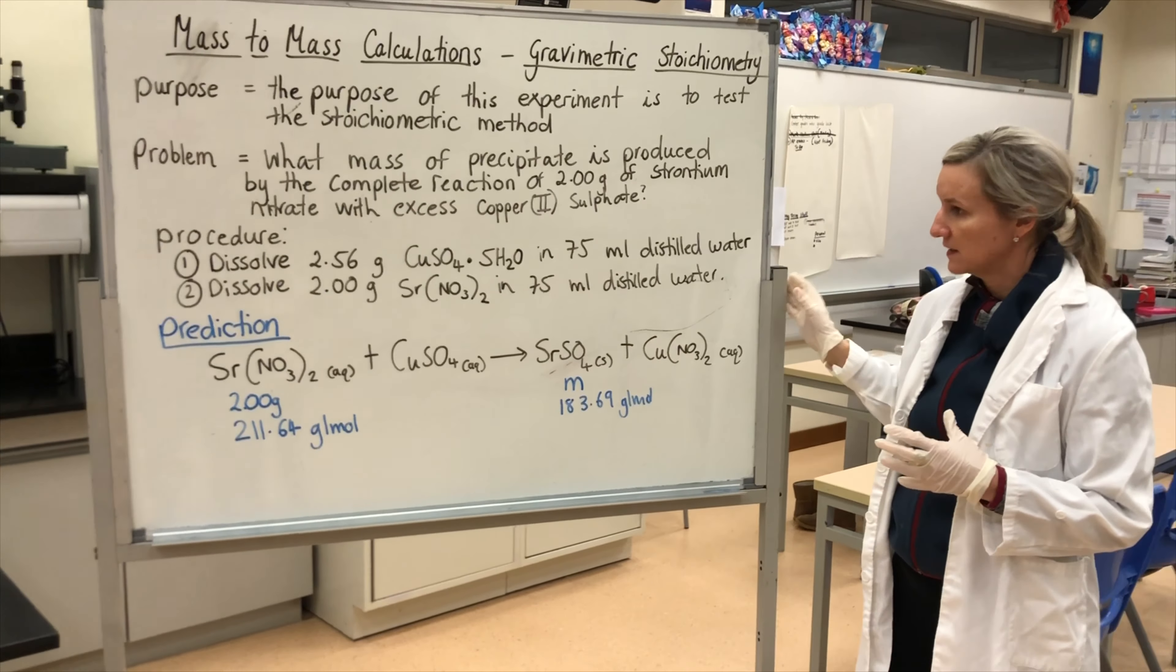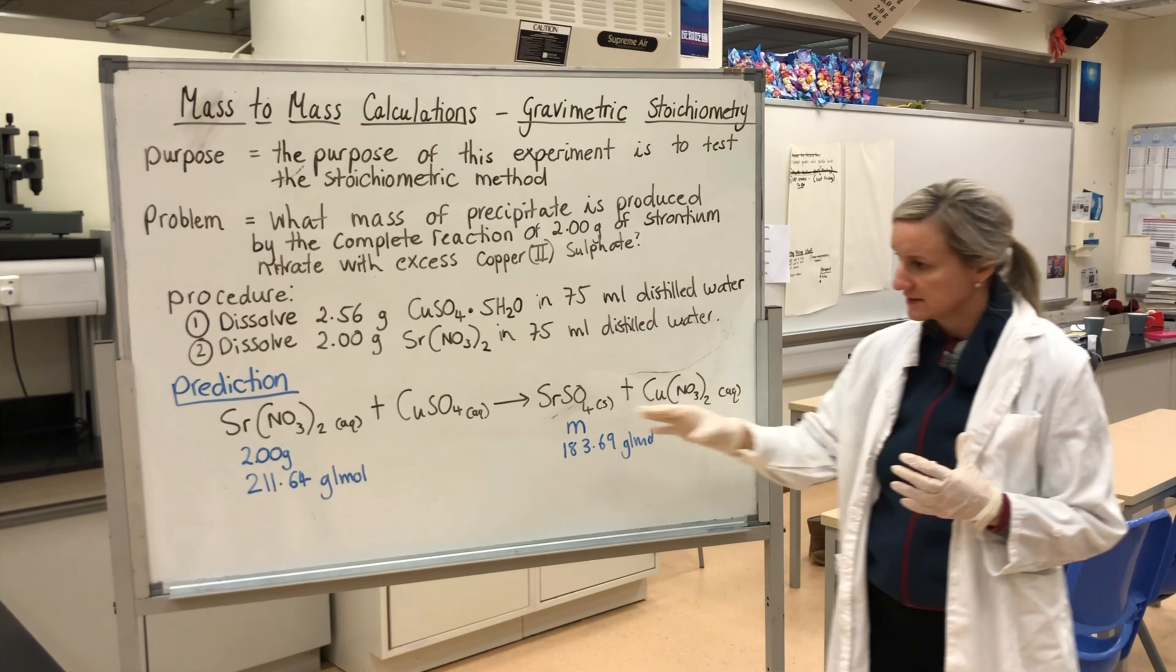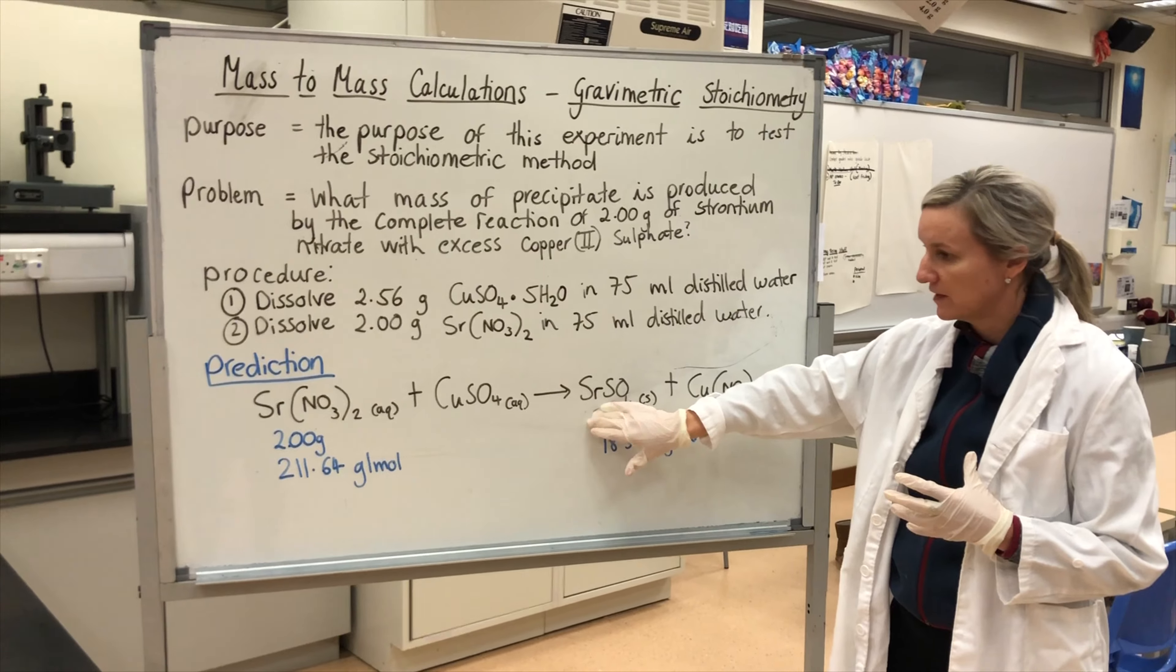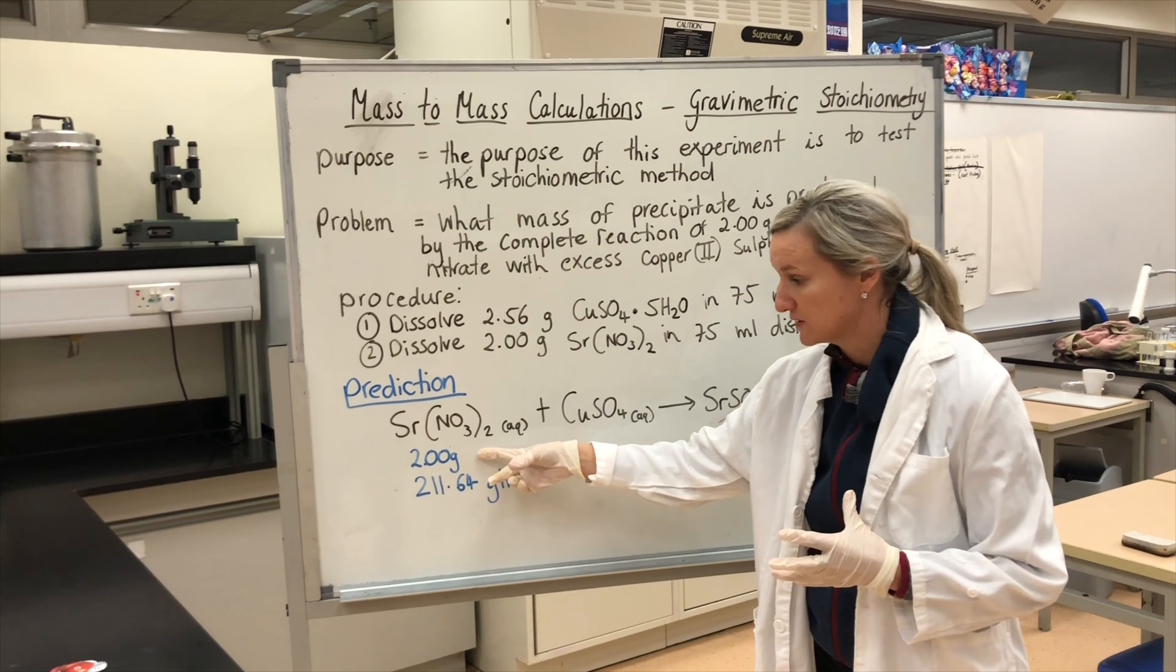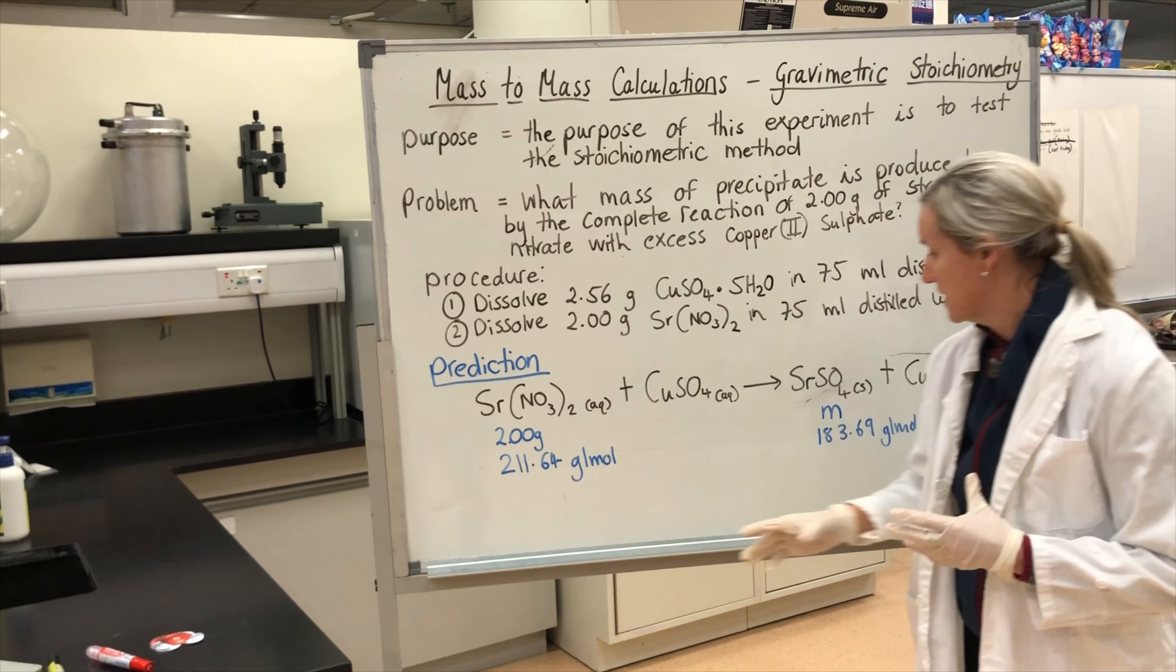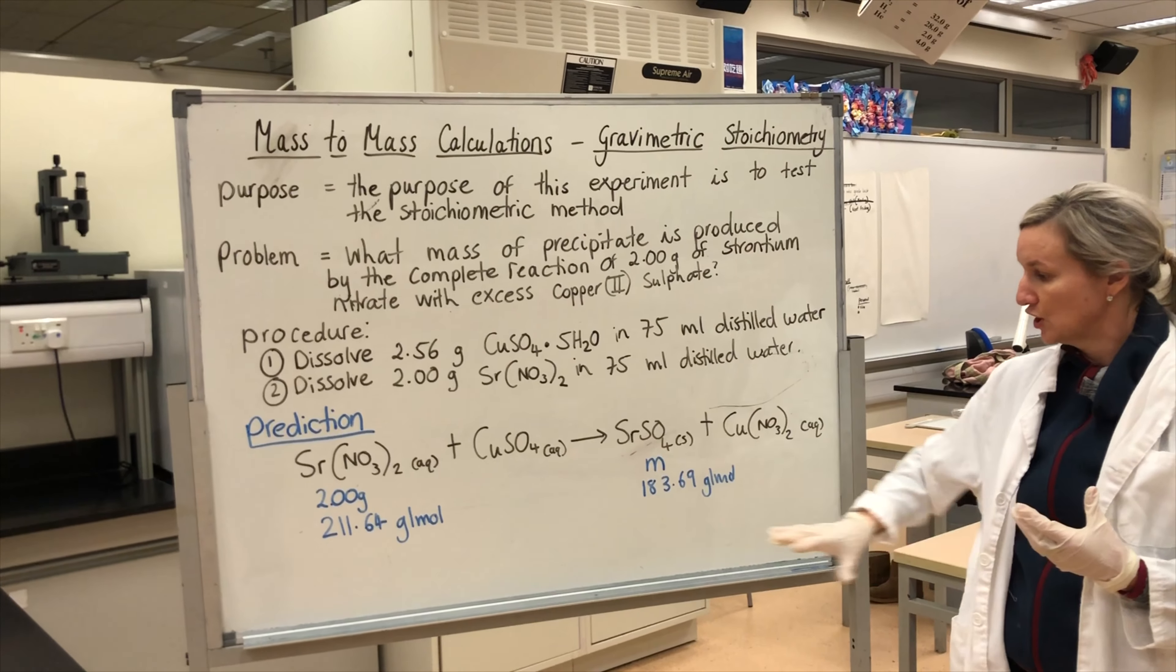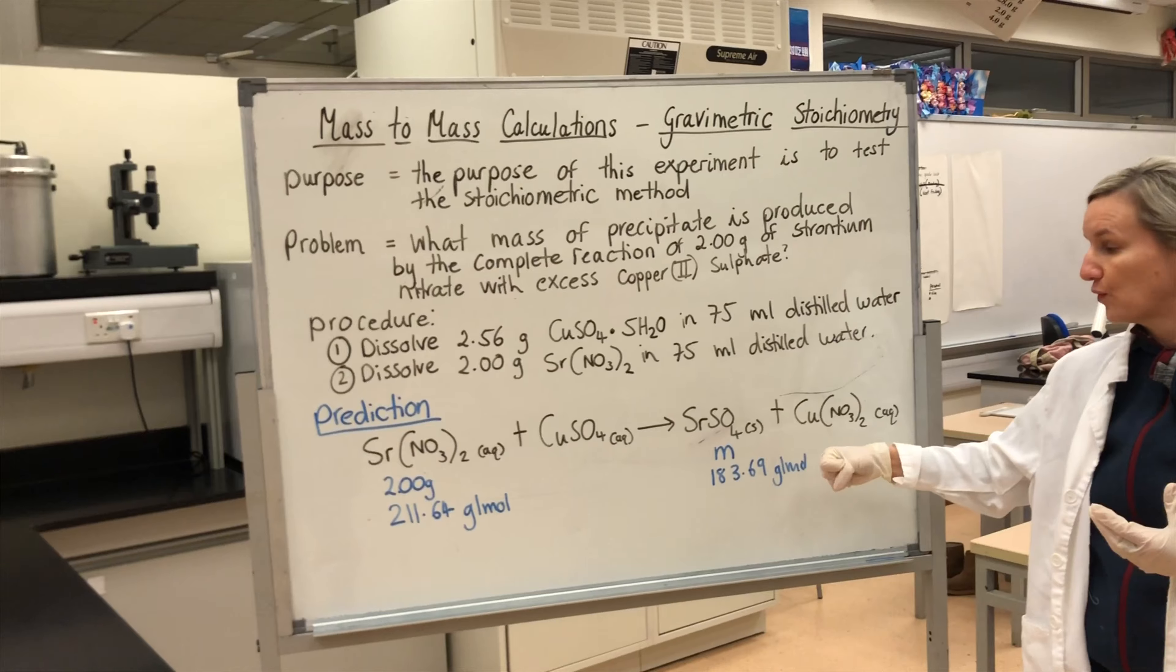So before we even begin, the great thing about stoichiometry is that we can actually predict how much mass we should get down here on our product side because we have the information of how much grams we started off with, our molar mass from the periodic table, and we can use that mole ratio to work out how much mass we're going to get. We can predict it before we even get it.